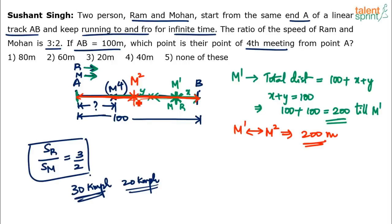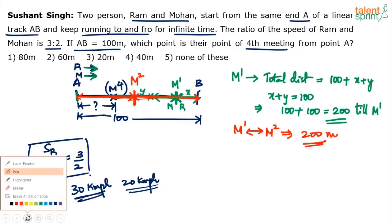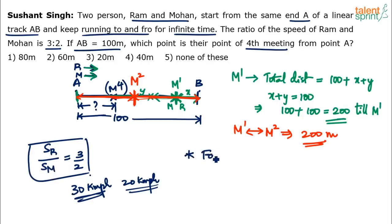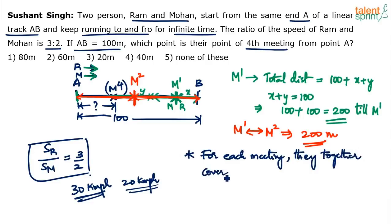For each meeting, they together cover 200 meters — double the path length. This is the most important point. Whether it is the first, second, third, or fourth meeting, each meeting accounts for 200 meters of combined distance. So for the nth meeting, the total distance covered together is n × 200.